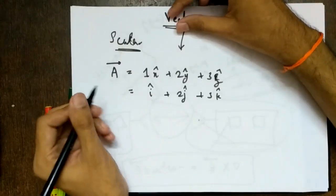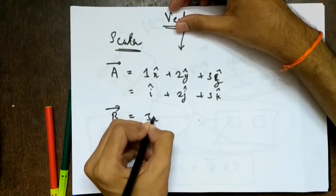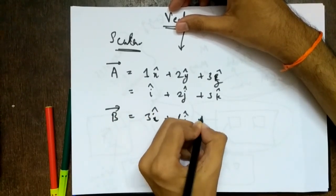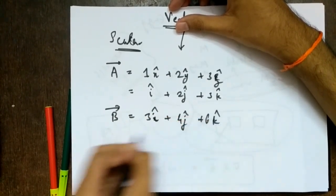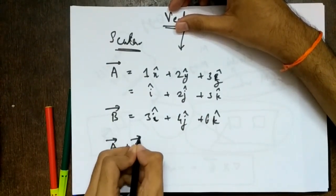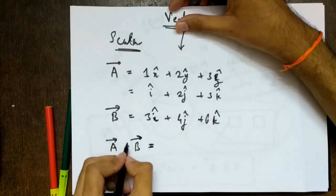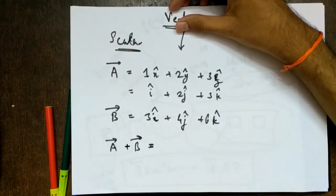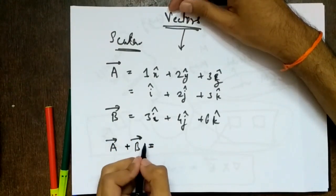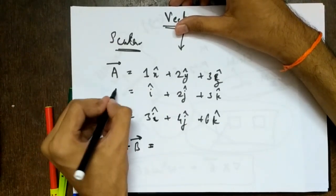Let's say I have one more vector B — it is three i-cap plus four j-cap plus six k-cap. I want to add these two vectors. This might seem trivial but for the sake of completeness I am covering it so that we don't face issues later. Many students face problems operating on vectors, which is why I am dedicating a separate lecture to this.